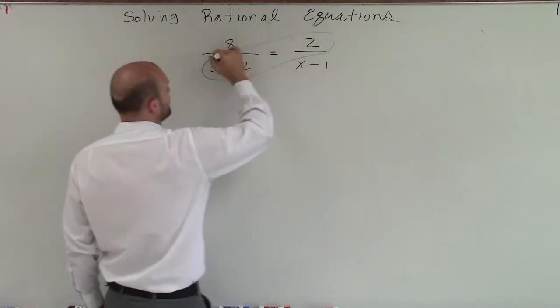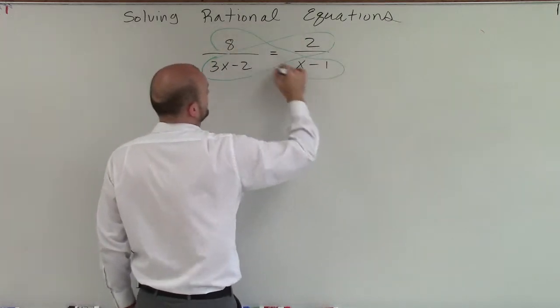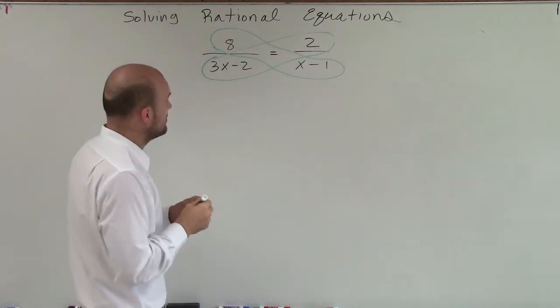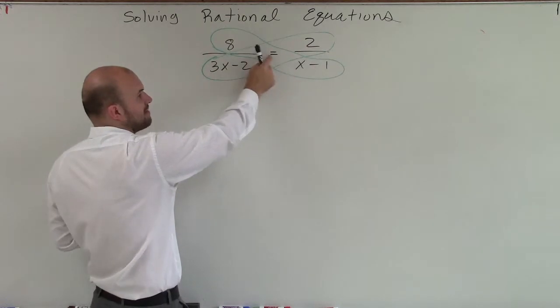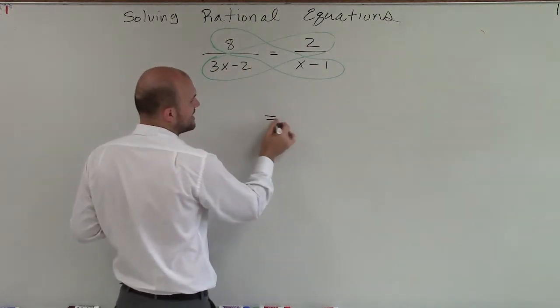So I'm just going to circle my cross products. And that's going to tell me I'm going to multiply cross, but my equal sign still stays where it's at.